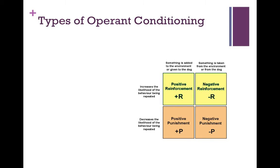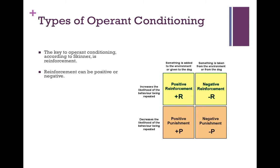There are different types of operant conditioning. The key to operant conditioning, according to Skinner, is reinforcement. Reinforcement can be positive or negative. A reinforcement can be anything that changes a response.